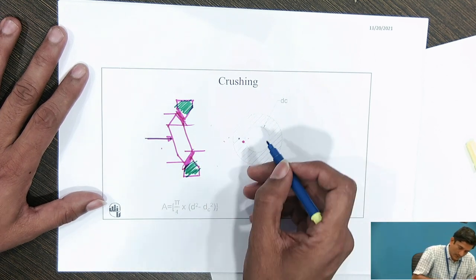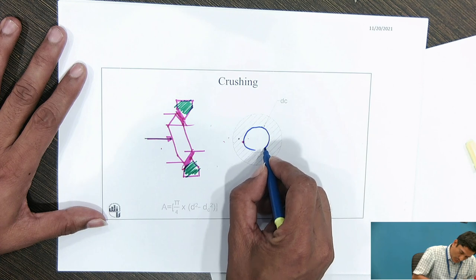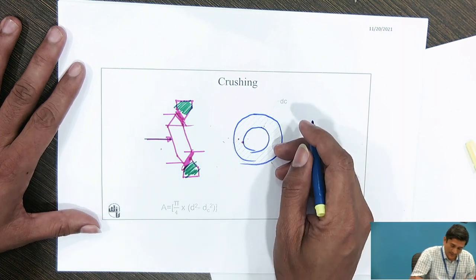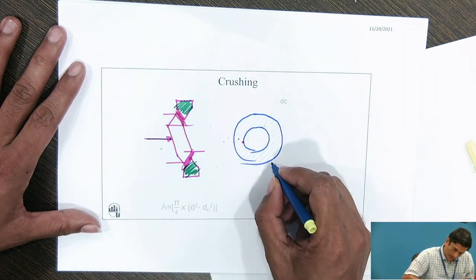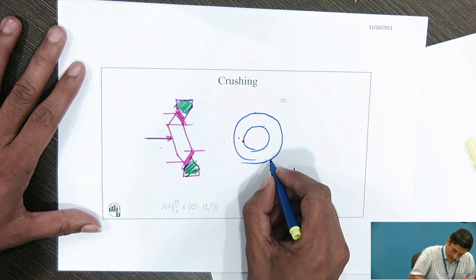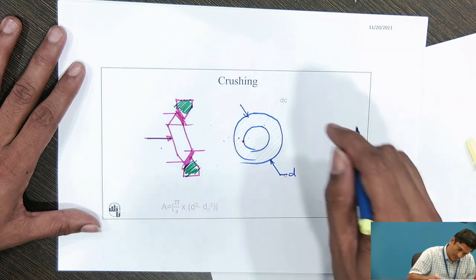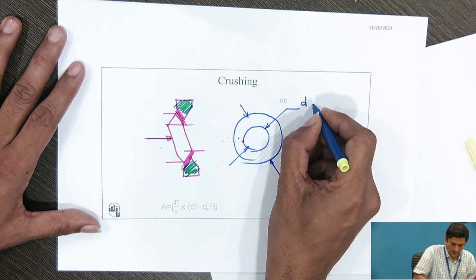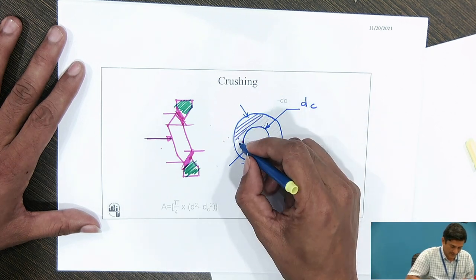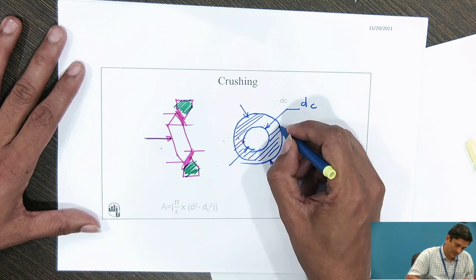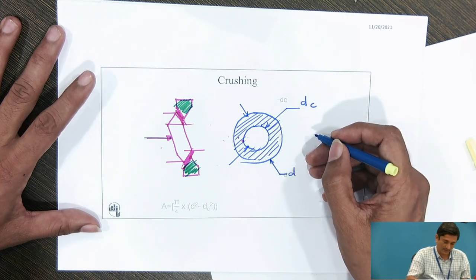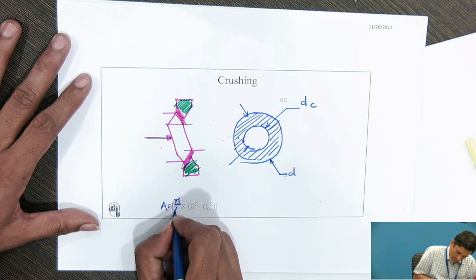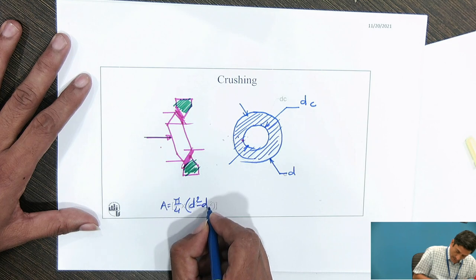Therefore, I can find out the area which is available for taking this load. No doubt it is slant, however, we have assumed it is straight. Outer diameter is small d, outer circle diameter is small d or this larger dimension. And this dimension if I take it is dc, the core diameter. Therefore, this much area is available for compression. Metal to metal contact is happening over there. I need to find out this area. The area is indicated by pi by 4, d square minus dc square. This is the net area.